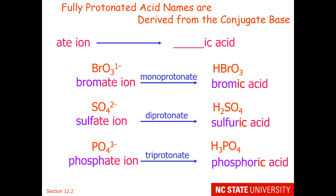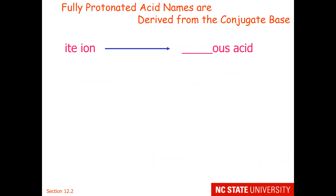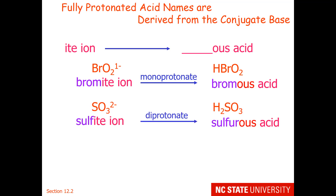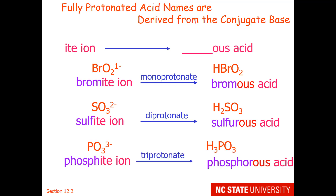And the phosphate ion we need to triprotonate, and it becomes phosphoric acid. The last rule is that '-ite' ions become '-ous acids'. For example, the bromite ion becomes bromous acid when we monoprotonate. The sulfite ion becomes sulfurous acid, and the phosphite ion, when we triprotonate it to the neutral species, is called phosphorous acid.